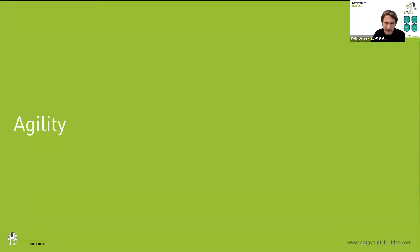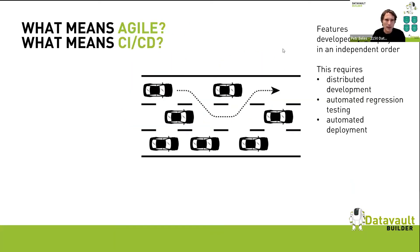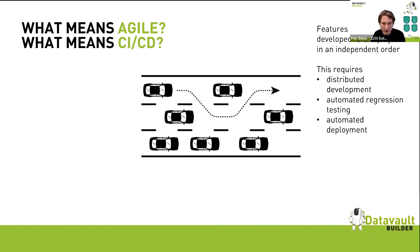What is agility really about? If these are different features or stories being developed, can you change your priorities? Can you start developing a feature later and deploy it earlier? This is how you react to market change and shifts in management strategy. For us this means we need distributed development — developing different features separately — and we need automated regression testing, because if I'm deploying weekly or even daily, manual testing is simply not possible.